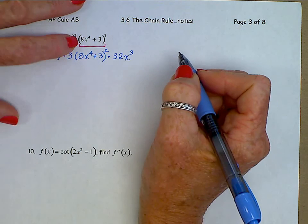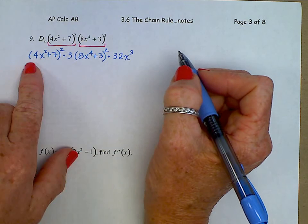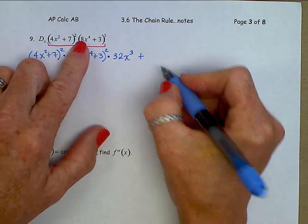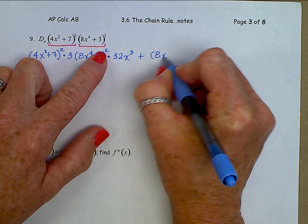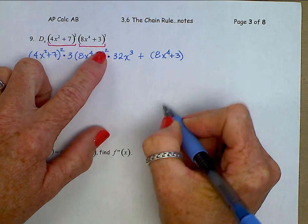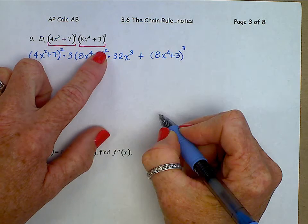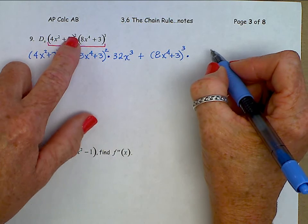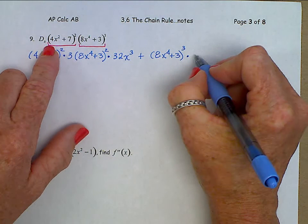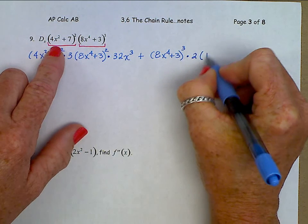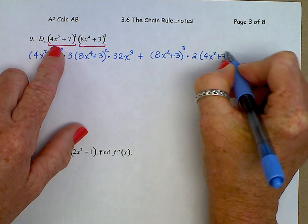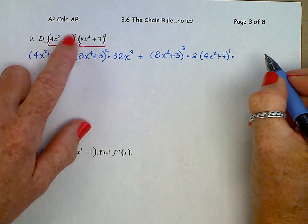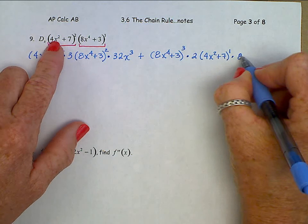There's half the product rule — first times derivative of the second. Plus the second: (8X to the 4th plus 3) cubed, times the derivative of the first. That outside exponent 2 comes down in front, giving (4X squared plus 7) to the first, then times the derivative of the inside, which is 8X.